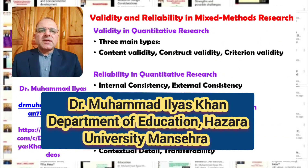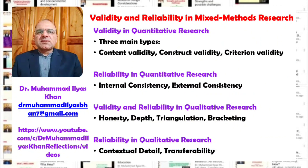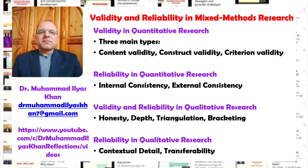As a result, the concept of validity and reliability in mixed method research design will be a combination of both the quantitative validation processes and the qualitative validation processes. In quantitative research, there are three main types of validity: content validity, construct validity, and criterion validity. Reliability in quantitative research is related to the internal consistency and the external consistency of the research process and outcomes.